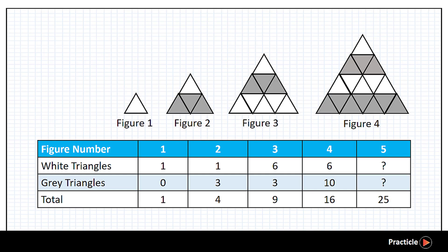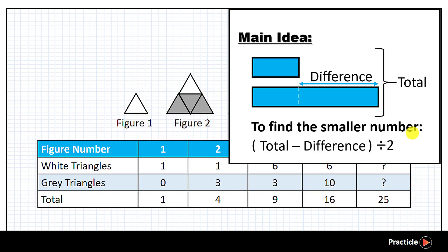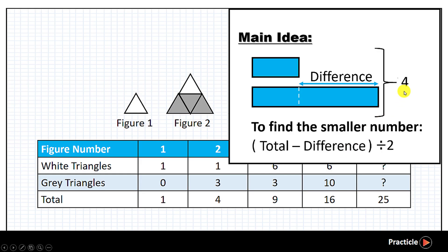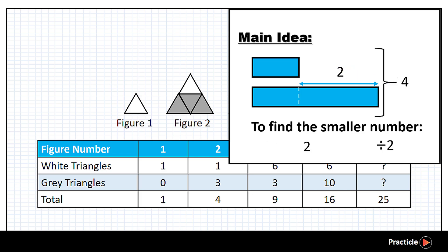Now let's apply this to the PSLE pattern question using figure 2 as an example. We know that the total number of white and grey triangles in figure 2 is 4, and the difference in the number of white and grey triangles equals the figure number, which is 2. So we subtract the difference of 2 from the total of 4, giving us 2. Then we divide by 2, and that tells us there is 1 white triangle. To find the number of grey triangles, we take the total of 4 minus 1, giving us 3 grey triangles — exactly what the table shows.